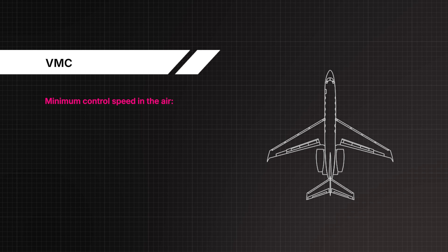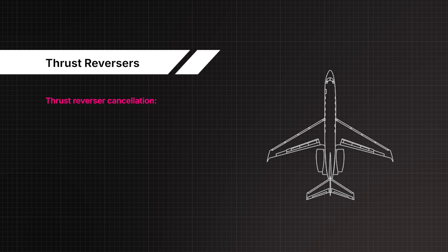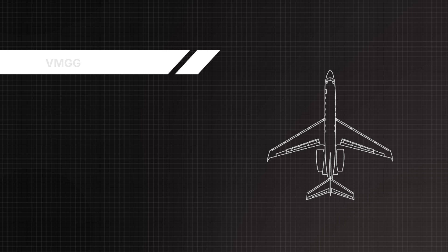Minimum control speed in the air: 104 knots. Thrust reverser cancellation: initiate by 70 knots. Minimum control speed on the ground: 111 knots.